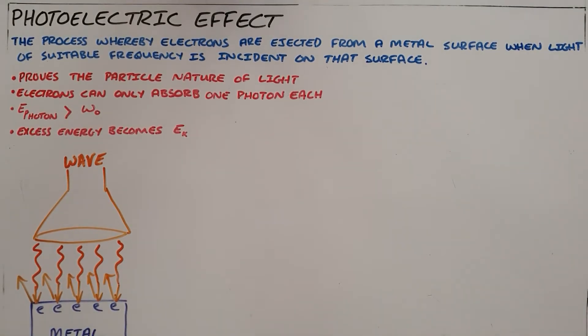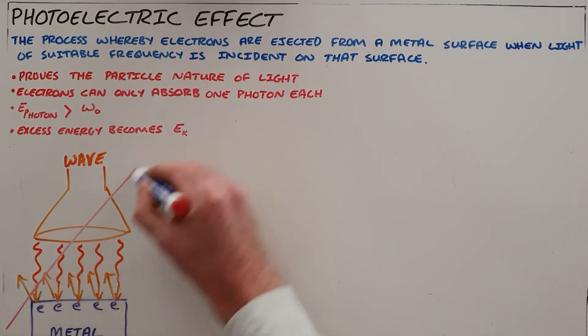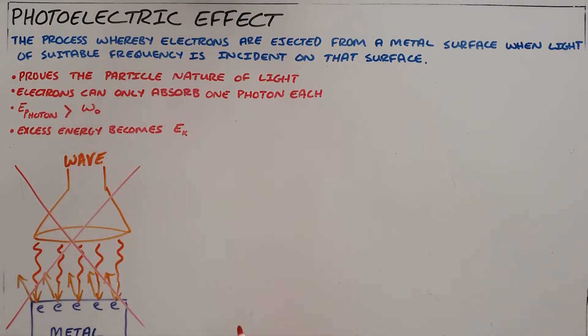Now in reality it's found that this is not the case. It's found that light does not behave like a wave because not all electrons will always be ejected from the surface of a metal.